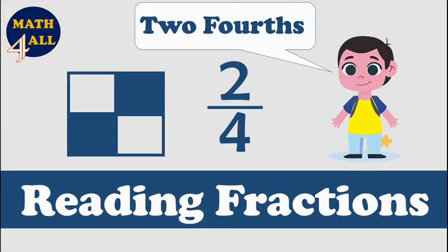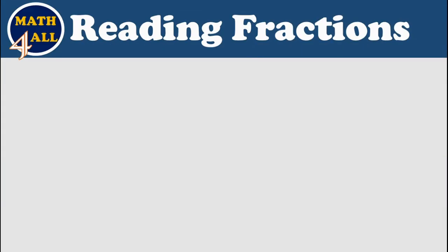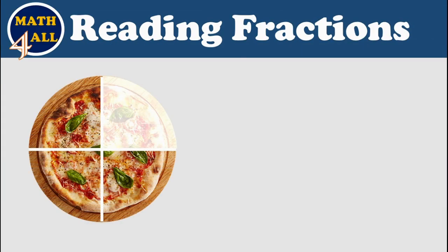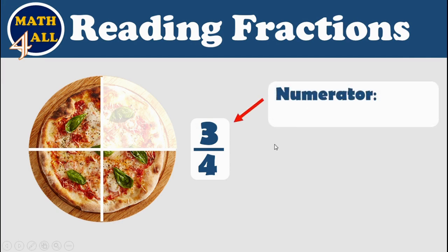Hi, today let's learn how to read fractions. Here we go. Look at this picture — you can see three parts out of four, or three over four. The digit 3 represents something called the numerator. The numerator represents how many equal parts you have. As you can see, you have just three pieces.